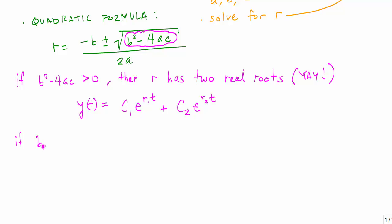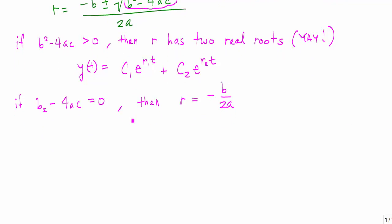If b² - 4ac equals zero, then we only have one root. Then r = -b/(2a). And our solution would look like y(t) = C₁e^(rt) + C₂te^(rt), some linear multiple.